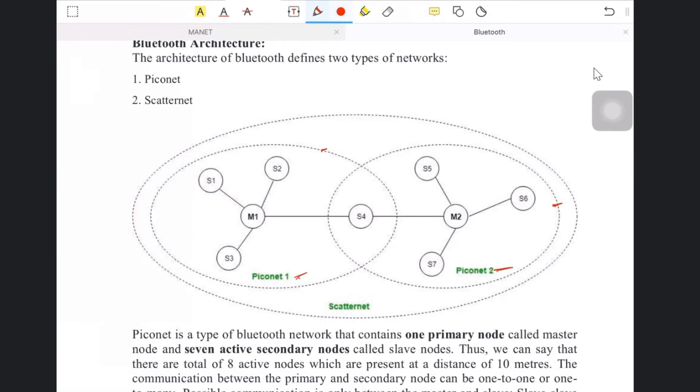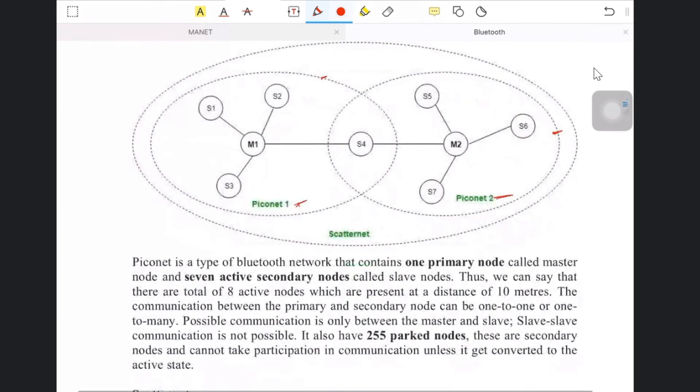In a Piconet, there is one primary node called the master node and seven secondary nodes called slave nodes. In this Piconet, there are a total of eight active nodes, but one will be master and seven will be slave nodes.